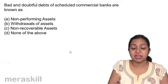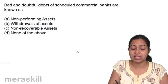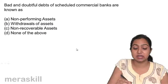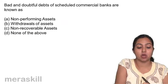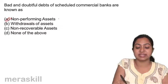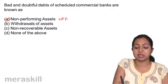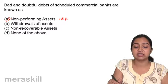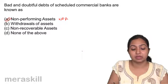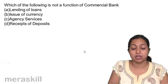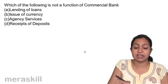Bad and doubtful debts of scheduled commercial banks are known as NPAs, or non-performing assets. The bad debts that are not realized or are doubtful are called non-performing assets.